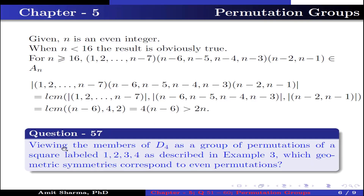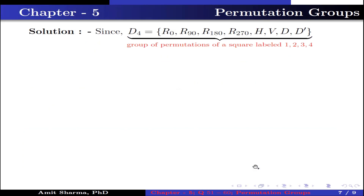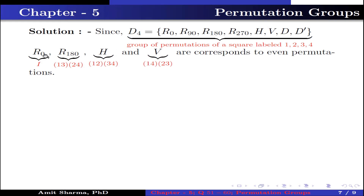Question number 57. Viewing the members of D4 as a group of permutations of a square labeled 1 2 3 4 as described in Example 3, which geometric symmetries correspond to even permutations? Since D4 contains the elements r0, r90, r180, r270, h, v, d, d′, the elements r0, r180, h = (1 2)(3 4), and v = (1 4)(2 3) correspond to even permutations.